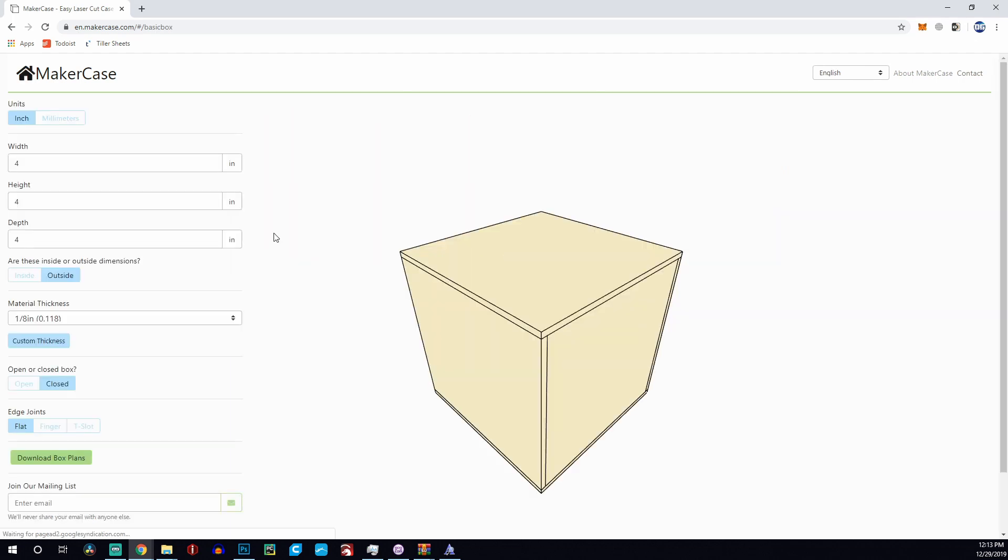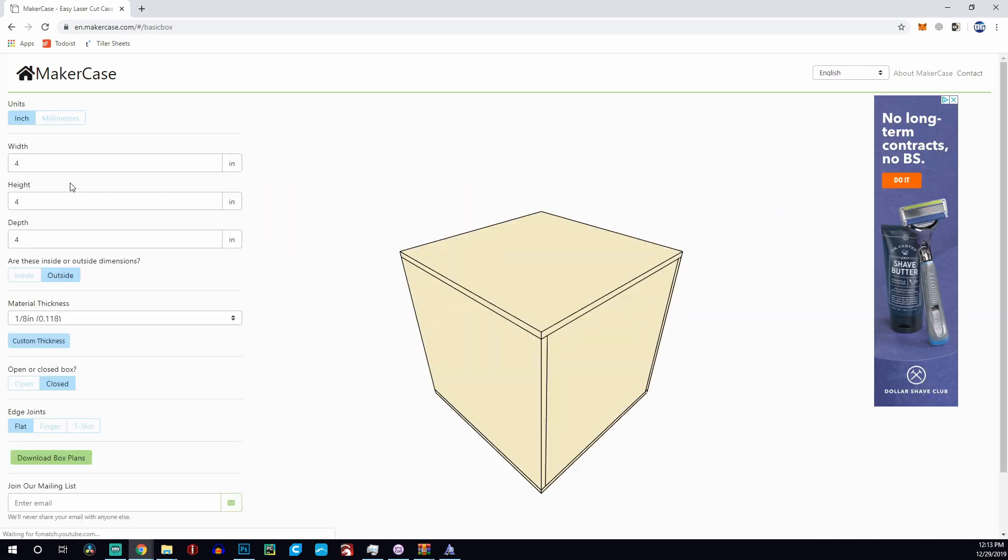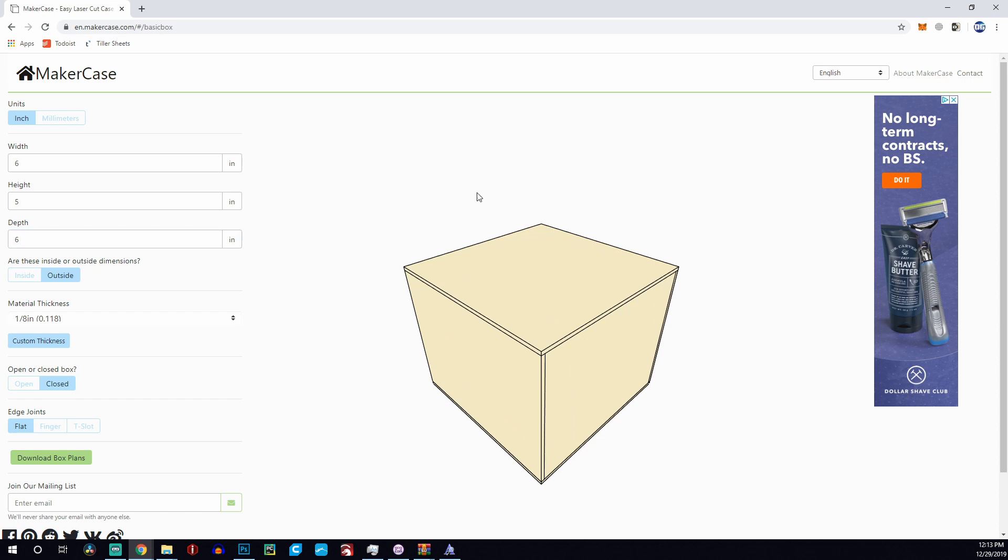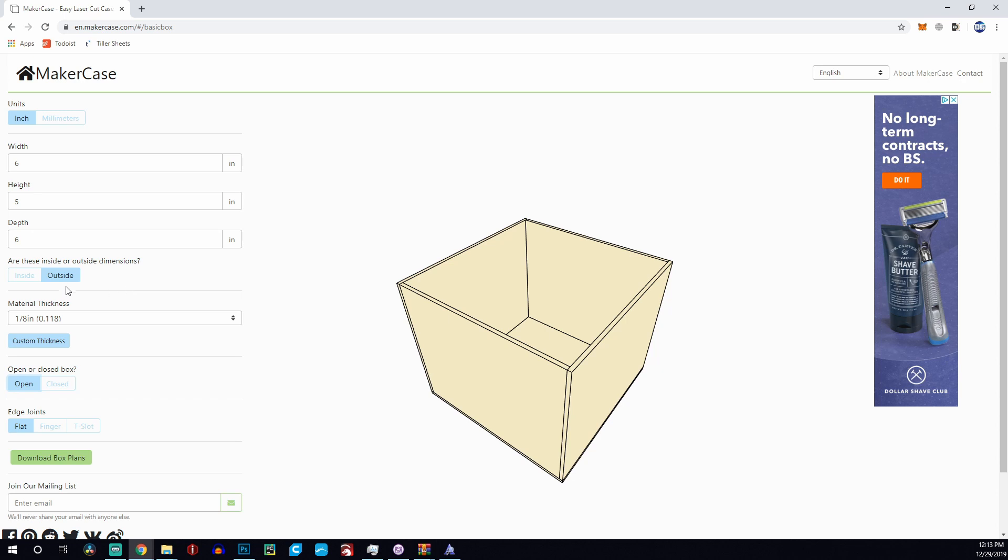Then I headed over to MakerCase, which is a super cool website that makes it really easy to create boxes with your laser cutter. I decided on a width, a height, and a depth for the box, which in the end, I went ahead and did six inches by five inches by six inches in depth, which just seemed like a random number, but I figured most of the things that I print will fall within that. You can obviously scale that if needed.